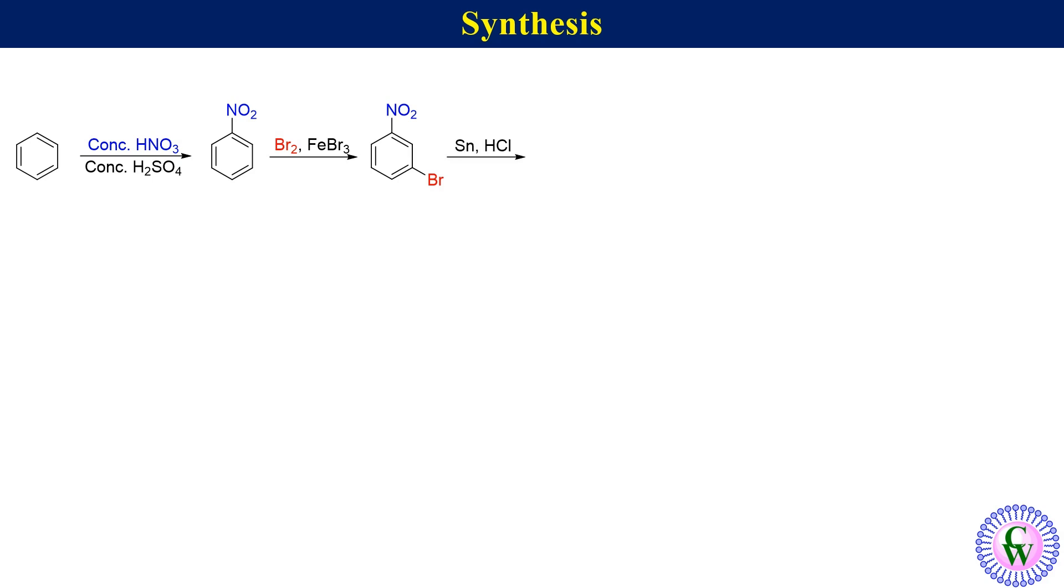Reduction of 3-bromo nitrobenzene with Sn/HCl gives 3-bromoaniline, which upon diazotization with sodium nitrite and hydrochloric acid gives 3-bromo benzene diazonium chloride.